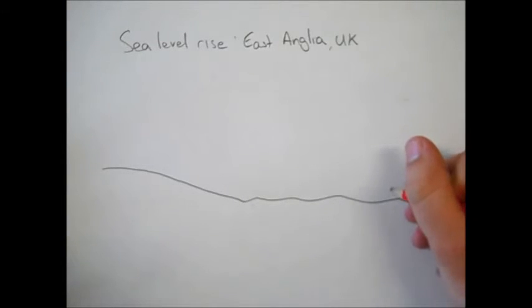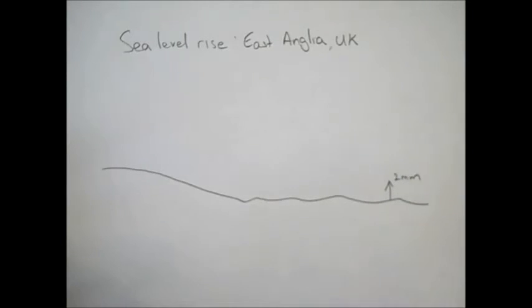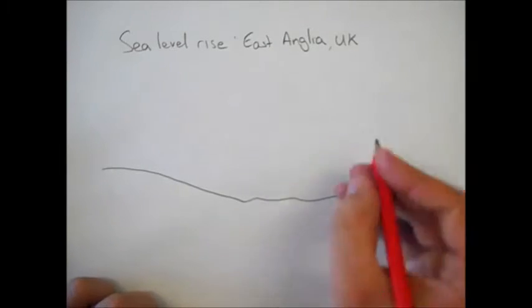First off we want to look at the rates of sea level rise. So that's occurring at the moment at about 2 millimeters a year. Now we'll look at the causes for that.